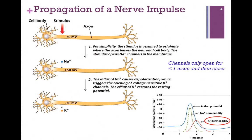These potassium channels are voltage-gated — they're sensitive to that change in membrane potential, which causes them to open. The concentration of potassium is higher inside the cell, so if we open the door it will spontaneously flow outside the cell, and so we repolarize the membrane potential. On our graph, over time we see an increase in potassium permeability as it moves outside the cell, and that matches our decrease in membrane potential — a restoration to our original membrane potential.